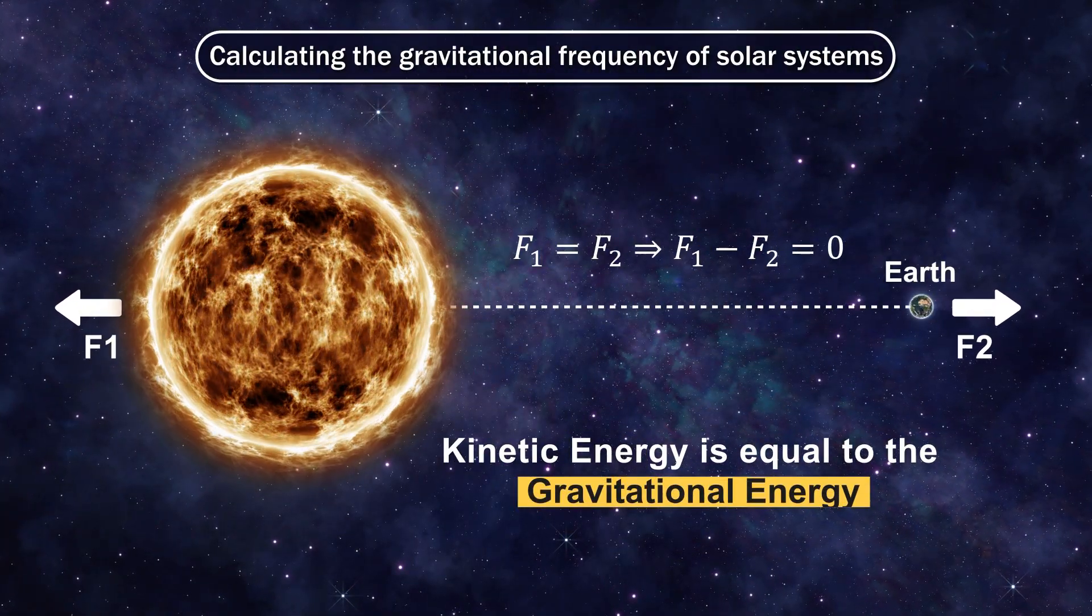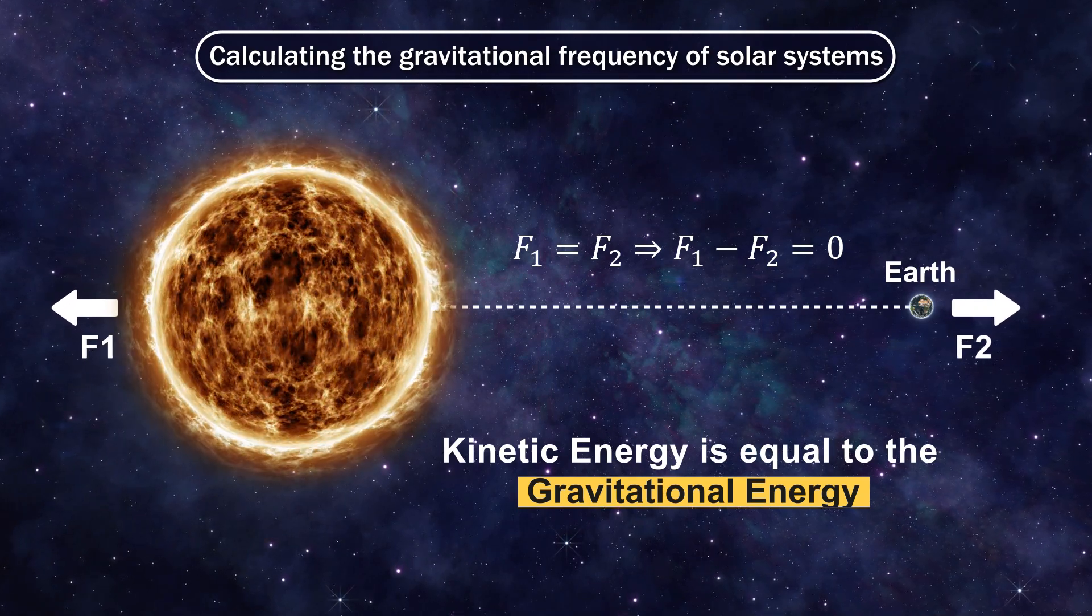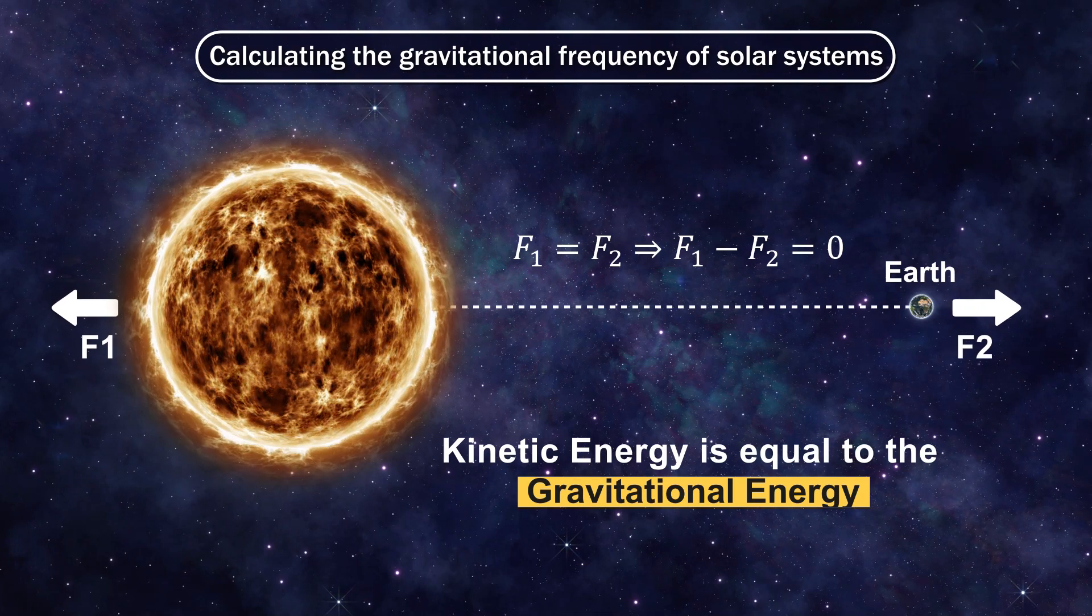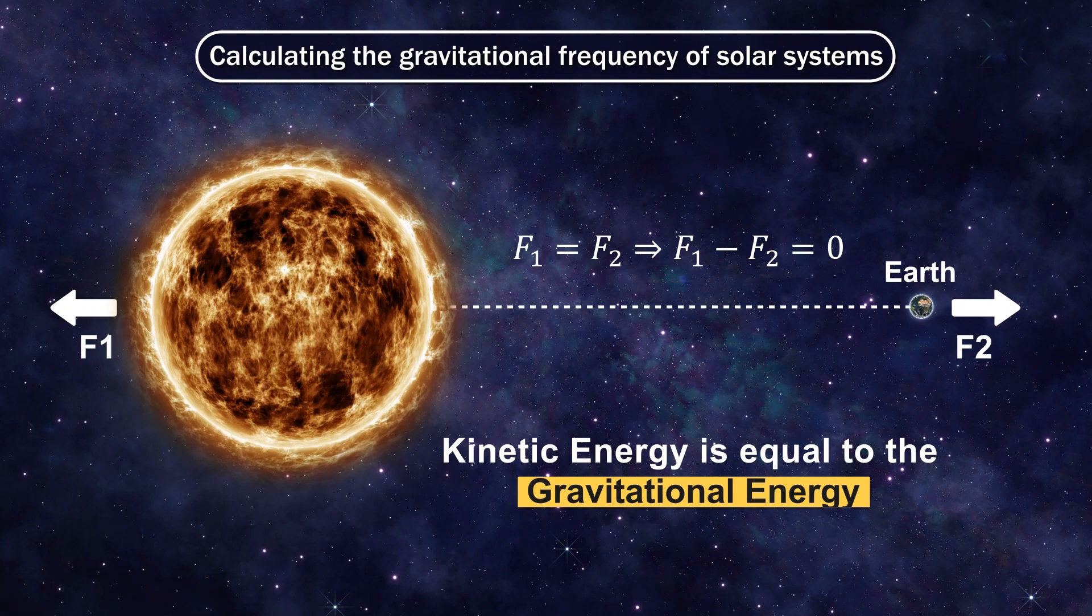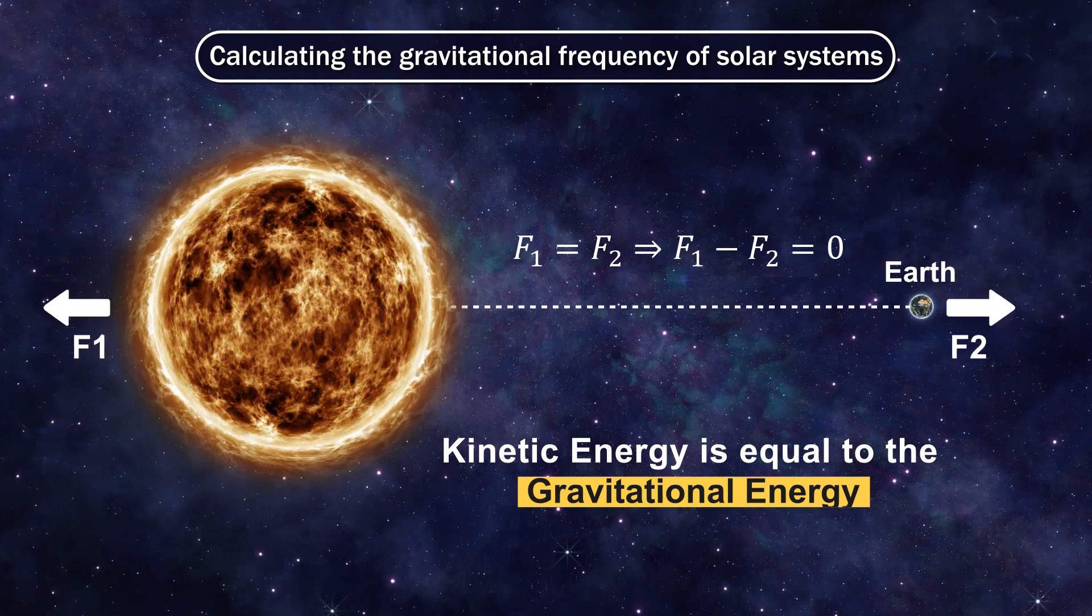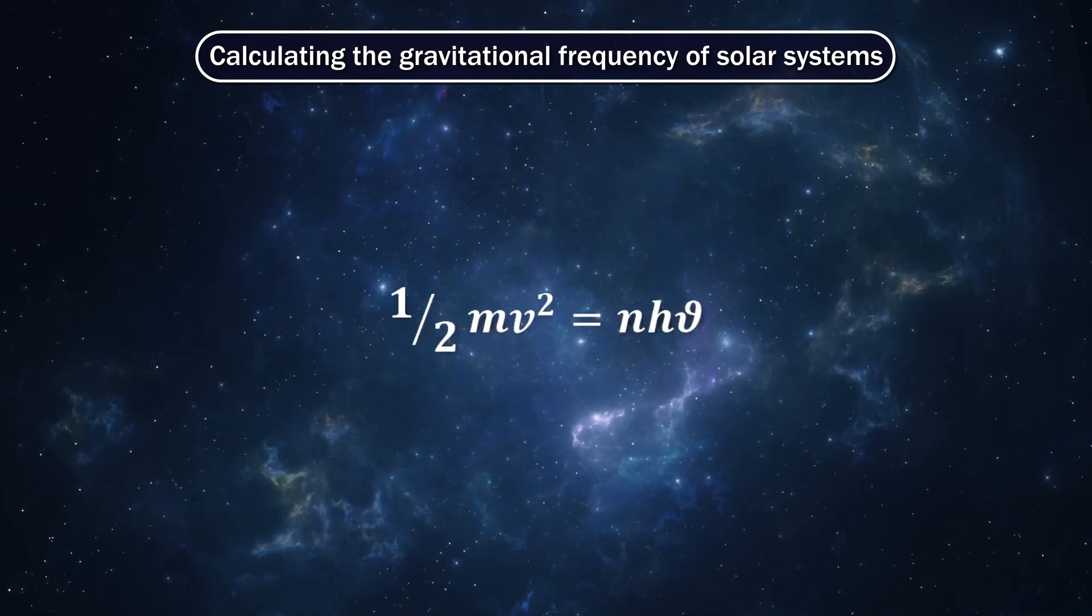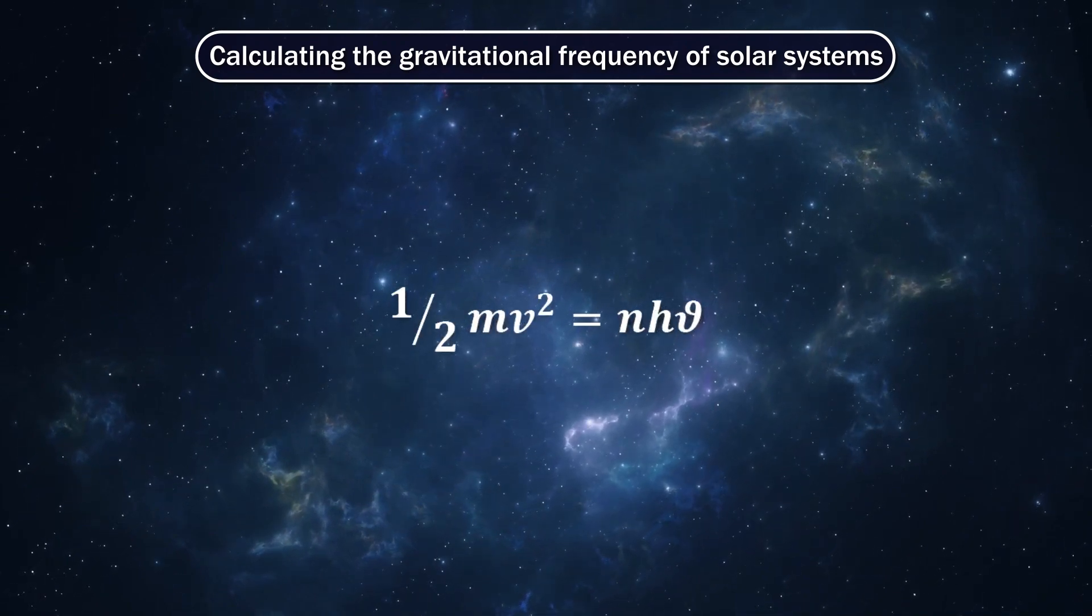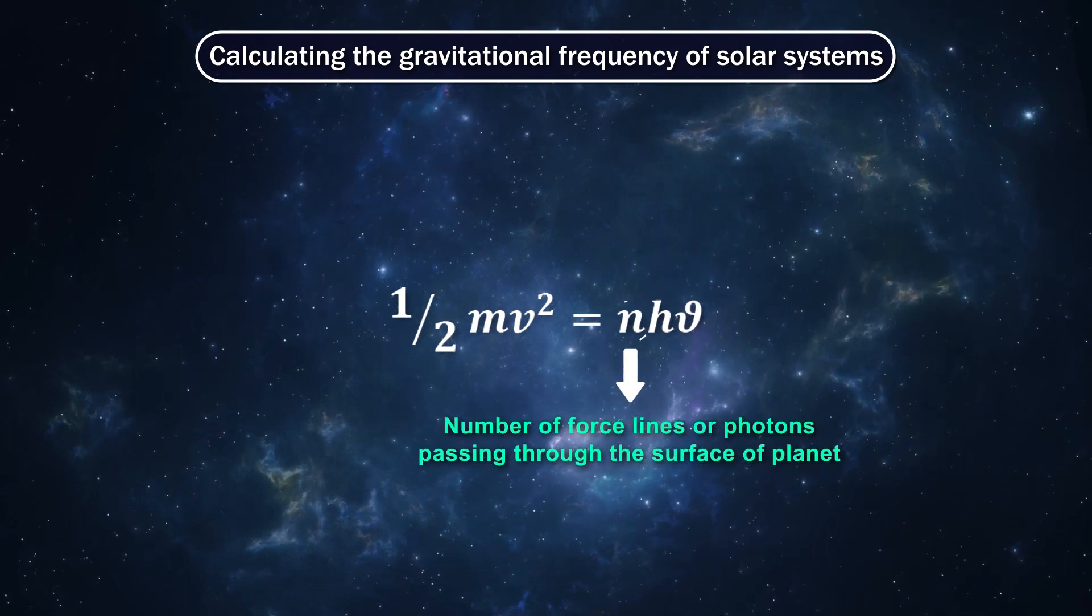Kinetic energy is equal to the gravitational energy. The relation between the energy of a planet and electromagnetic waves will be where n is the number of force lines passing through the surface of the planet.